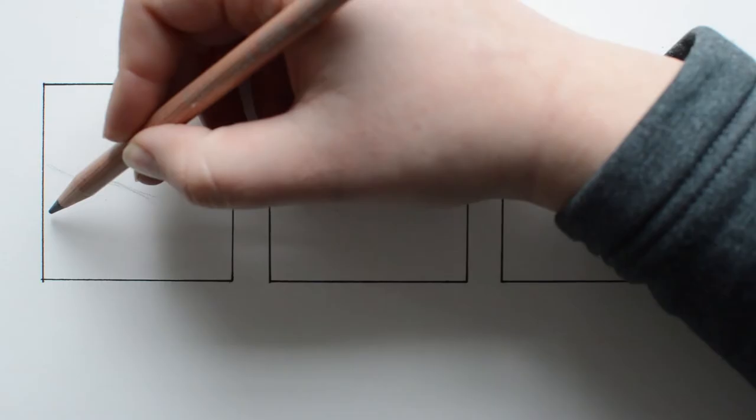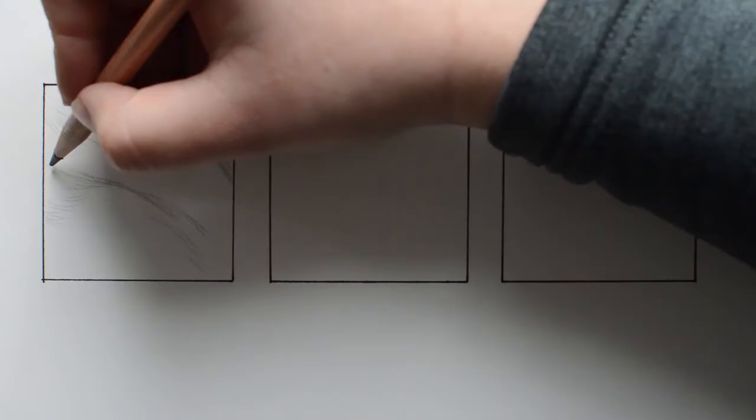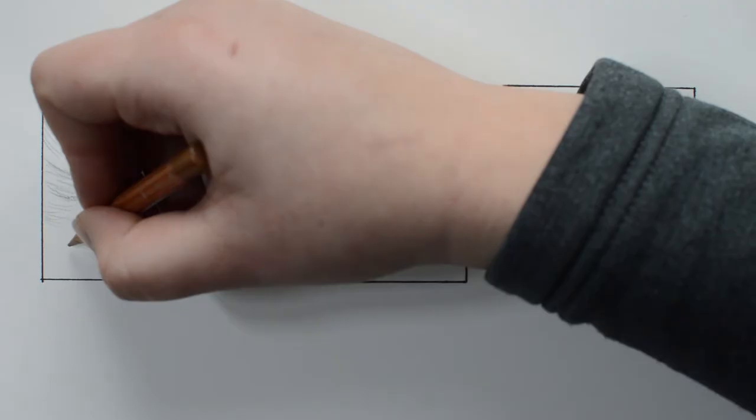When I'm drawing fur I always start with sketching. Here you can see I just sketch out basically how the fur is going, what direction and the different layers and parts of fur.